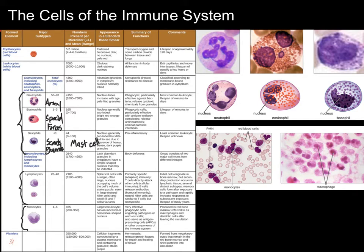An important thing to keep in mind is that histamine, which is released by basophils, is involved in allergic reactions. Basophils are actually involved in allergic reactions as well — when you have an allergy, they are the cell that freaks out in response to the allergen, releasing histamine and causing inflammation, which is your allergic response. We'll talk about this more when we talk about allergens, but just keep in mind that basophils are the cell that goes wrong in most allergies.